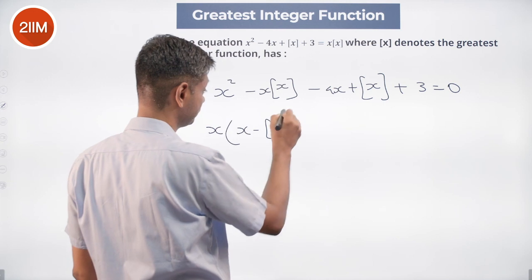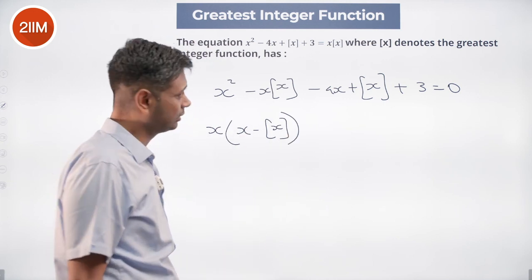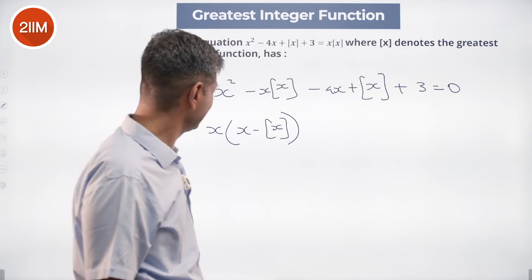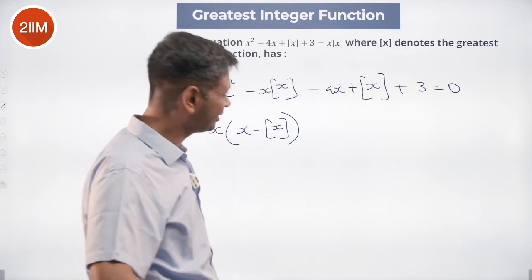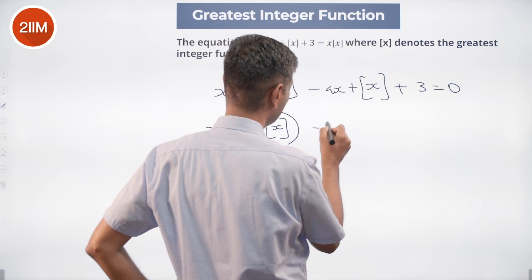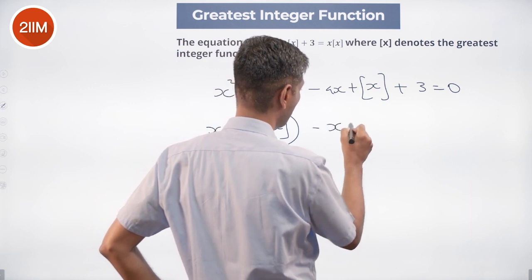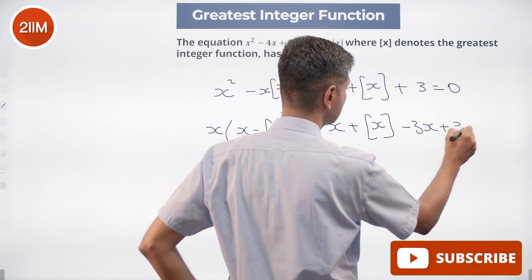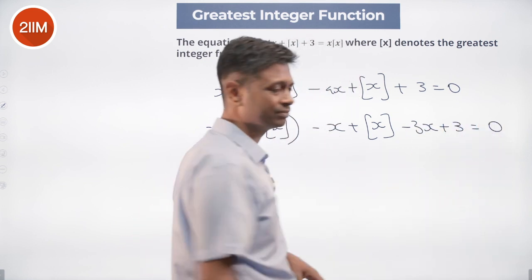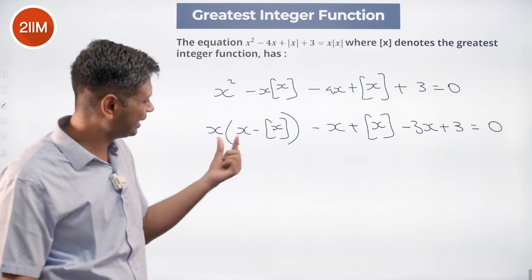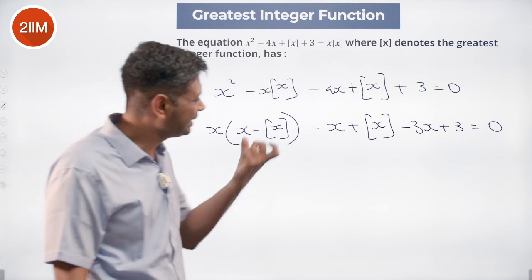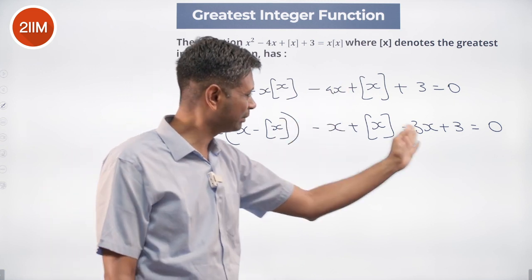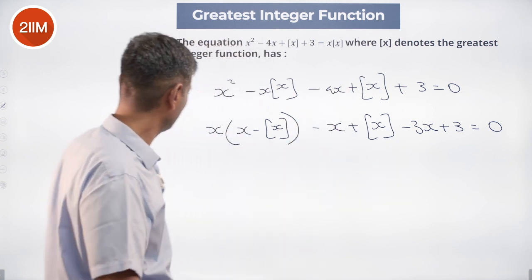We want to pull out x minus greatest integer of x terms. This gives us minus x plus greatest integer of x minus 3x plus 3 equals 0. There's an x minus greatest integer of x factor here — let's create one more x minus greatest integer of x by breaking minus 4x as minus x minus 3x.